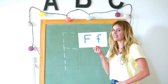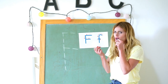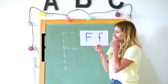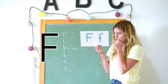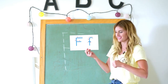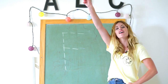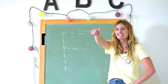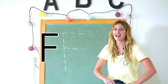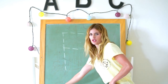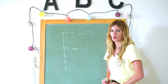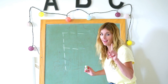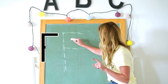Let's say it in an underwater voice because we're going to be fish: down, across, across F. Nice work. Let's do it in the air — finger in the air. Ready? Down, across, across F. Watch me trace it on the chalkboard — I'm going to do it so fast. Don't blink. Down, across, across F.